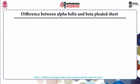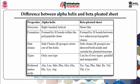The difference between the alpha helix and beta pleated sheet is shown very clearly in table 1.